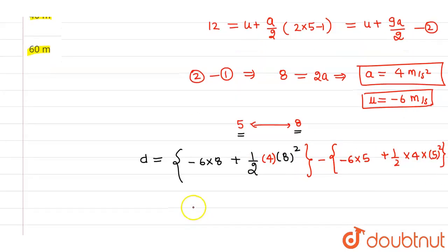So if you calculate this, this will come out to be 8u and this will come out to be 20. So 80 minus 20, this will be equal to 60 meters.